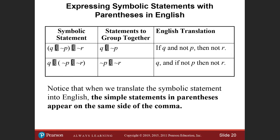So we have another example here, expressing symbolic statements with parentheses in English. So on the first column we have the symbolic statement, the second column would be the statements grouped together, and the third column would be the English translation.